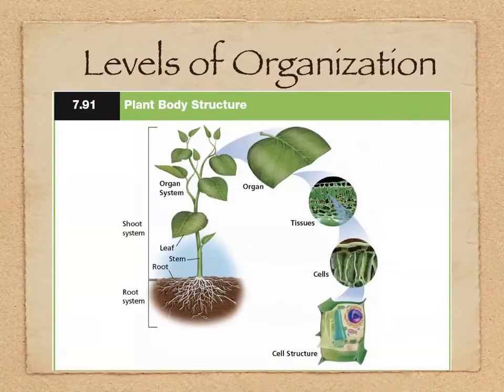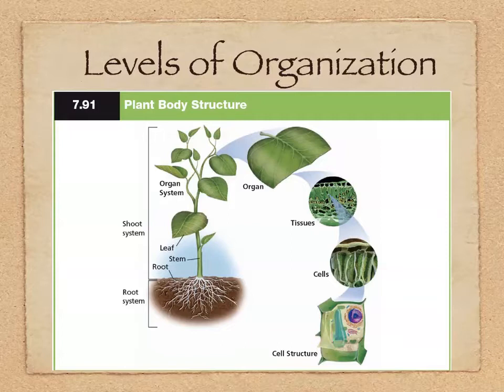There are certain levels of organization we're going to be looking at. The smallest, of course, is the cell structure — what the individual parts of the cell are. Moving up in size, we have cells, and cells combine to form tissues. Tissues combine to form organs, and organs combine to form organ systems. Different organ systems working together create the entire plant.